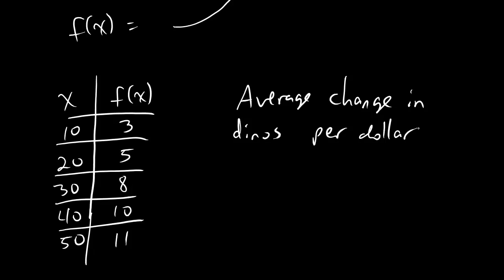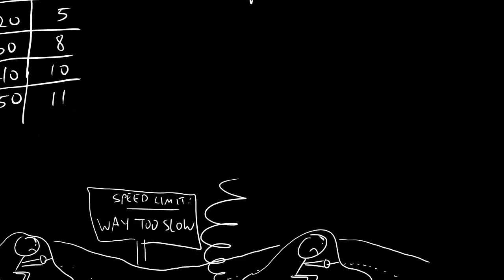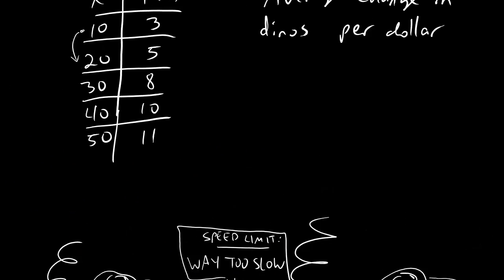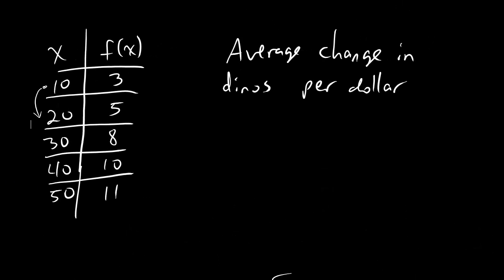The higher the average change in dinos per dollar, the more dinosaurs I'm getting if I go from a lower price to a higher price. So, we can even eyeball some of these numbers. Let's say I'm starting at $10, and I go to $20. Well, I go from three to five dinosaurs. Getting two dinosaurs is good, I guess. But for the exact same jump in price, going from $20 to $30, I get three dinosaurs more instead of two dinosaurs more. So, going from $20 to $30 is kind of a better deal than going from $10 to $20. And we want a way to make that precise.